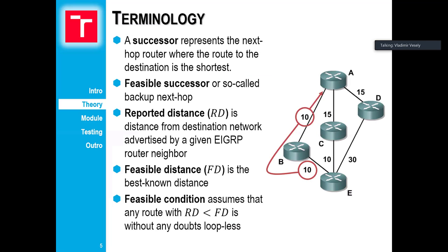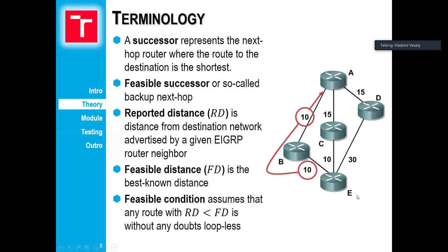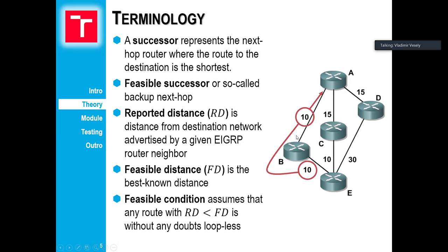I will briefly mention the terminology EIGRP uses. Imagine a topology where router A has neighbors B, C, and D, and router A is searching for routes towards router E. Among routers B, C, and D, there is one called the successor router — the router or next-hop IP address that leads towards the destination using the shortest possible route. To measure the metric, EIGRP uses reported distance and feasible distance. Reported distance is the distance reported by a neighbor.